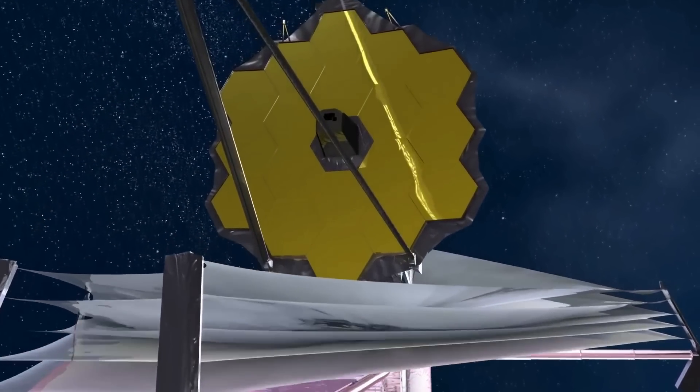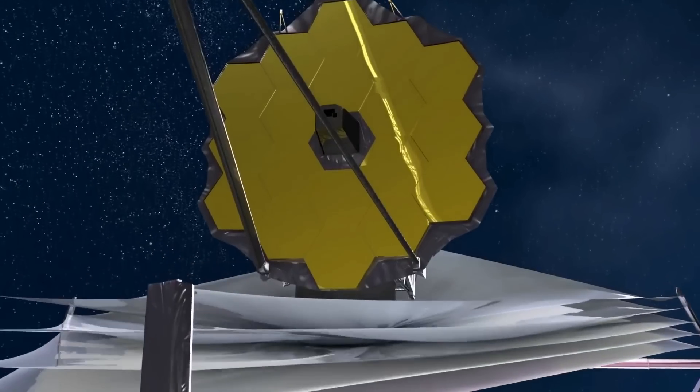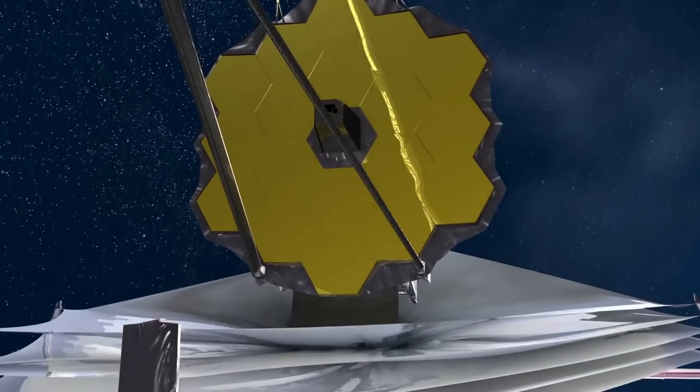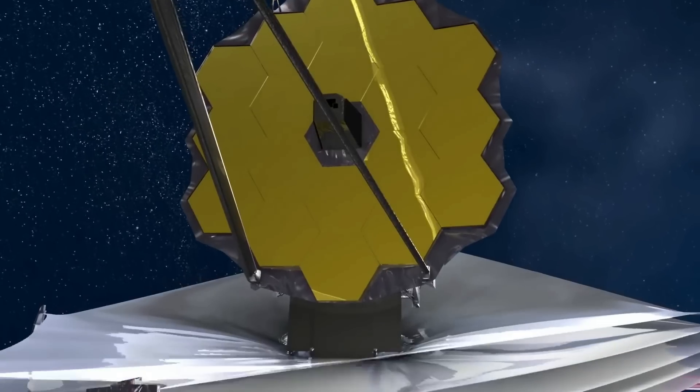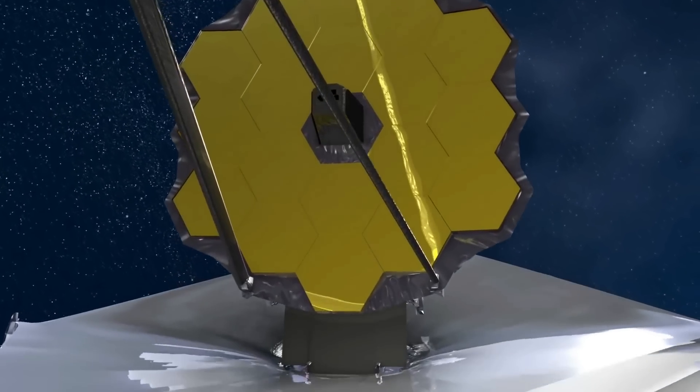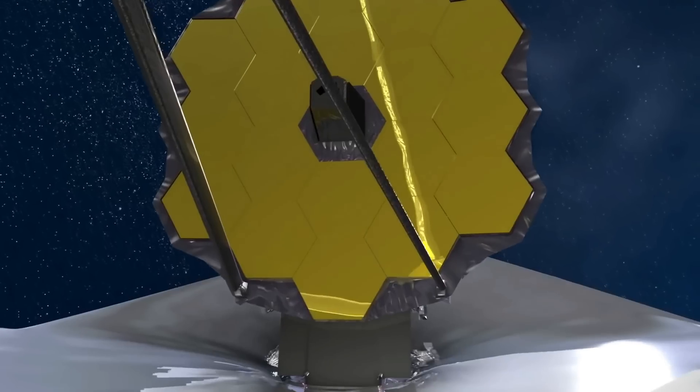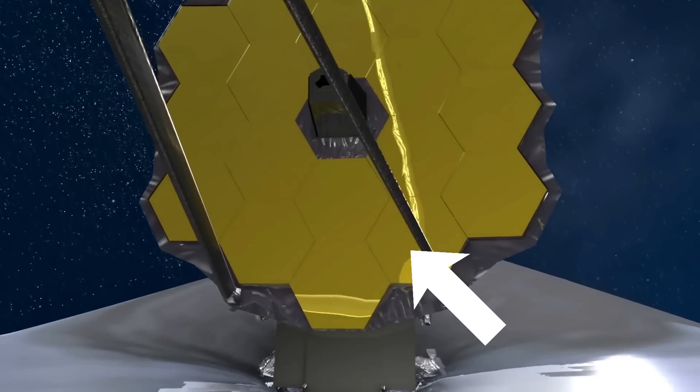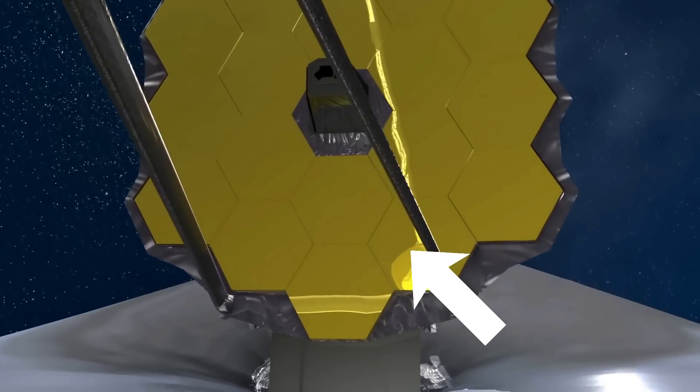And this is what happened with the James Webb telescope. In May, one of these tiny fragments collided with and damaged one of its 18 special hexagonal mirror segments. The mirror that was hit is called C-3 and is on the lower left of the telescope.